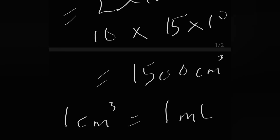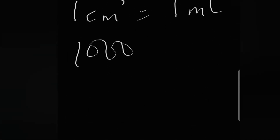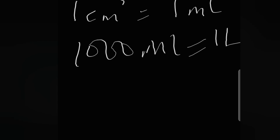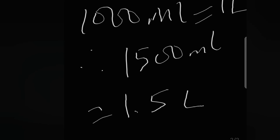Now to convert cm³ to liters, you first convert cm³ to milliliters. As we all know, one cm³ is equivalent to one milliliter. And 1,000 milliliters is equivalent to one liter. We already have 1,500 milliliters, so that means that tank holds just 1.5 liters — and that is just an assumption for illustration.